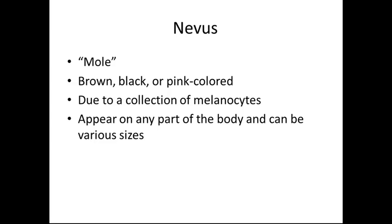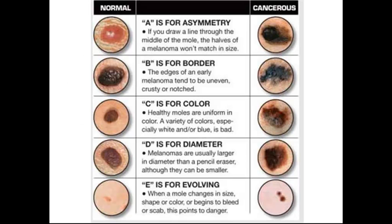Nevuses, also called moles, can be brown, black, or pink in color due to the collection of melanocytes. They appear on any part of the body and can be of various sizes. It is important to educate patients on the ABCDEs of moles to detect whether they are cancerous: A is for asymmetry, B is for border, C is for color, D is for diameter, and E is for evolving.